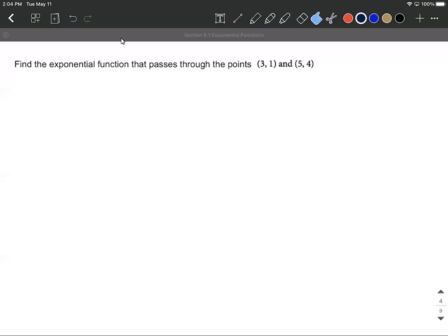Okay, on this example, our goal is to find an exponential function that goes through two points that are given to us. On this one, it's a little bit more difficult because neither one of these ordered pairs is our y-intercept. So let's get going on this. I'll walk us through all the steps as we go through.